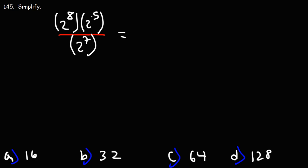So 2 to the 8 times 2 to the 5, that's 2 to the 8 plus 5, which is 2 to the 13. 2 to the 13 divided by 2 to the 7, that's 2 to the 13 minus 7, which is 2 to the 6.